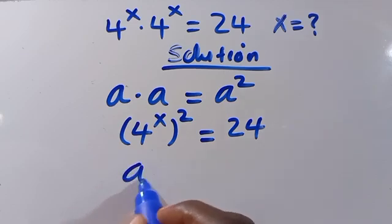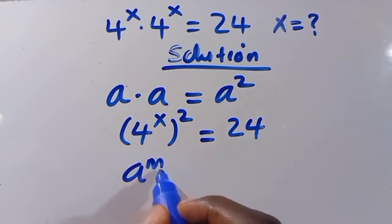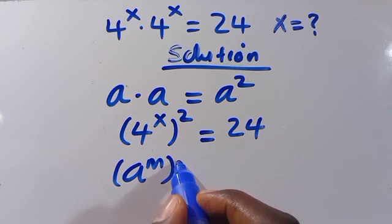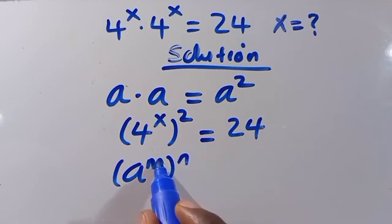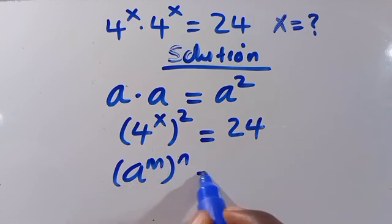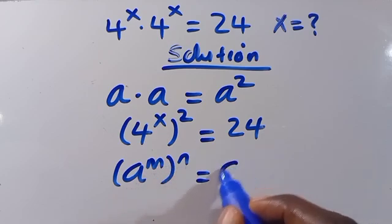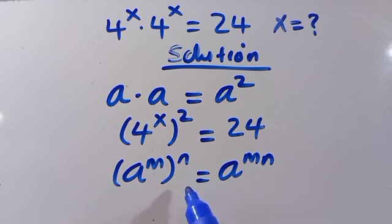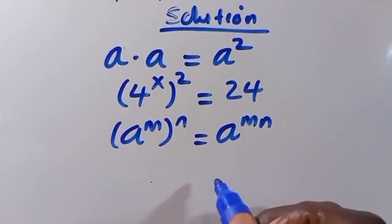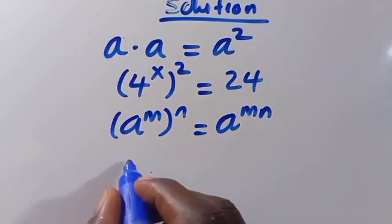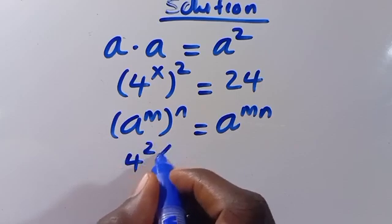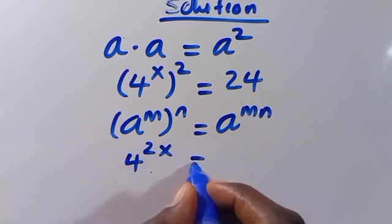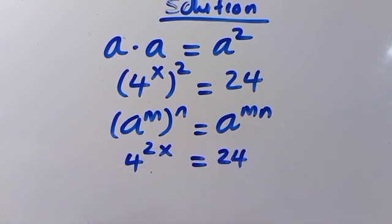Then when we have a to the power of n, to the power of n, we can interchange the powers — or multiply the powers — as a to the power of m times n. So applying this here, we get 4 to the power of 2x equals 24.